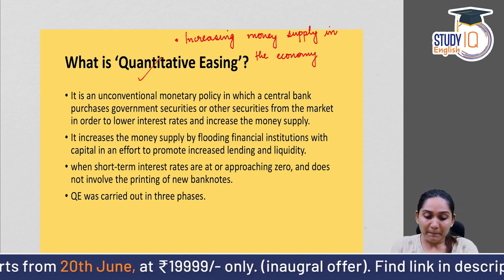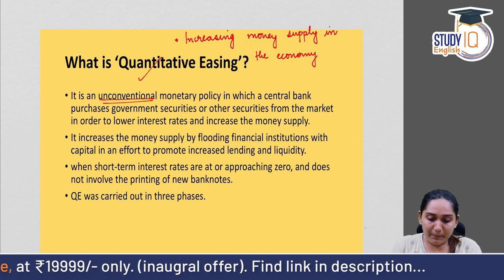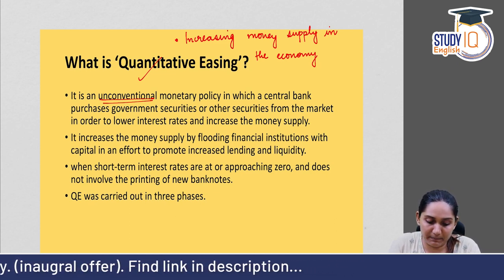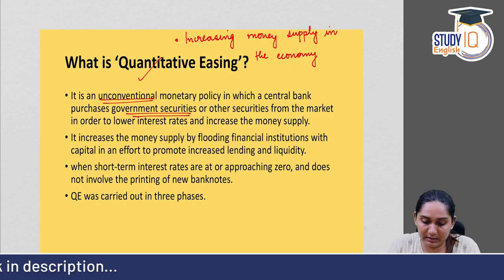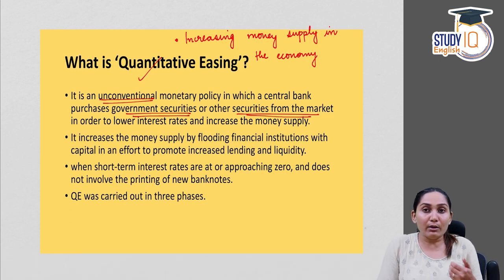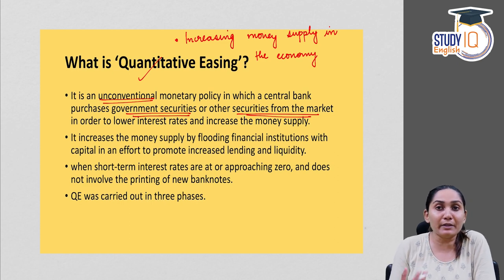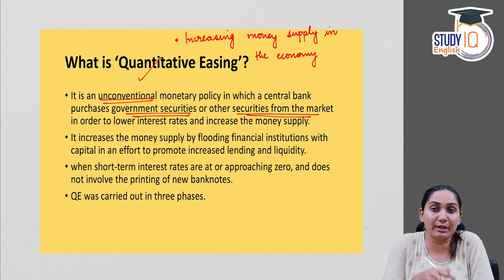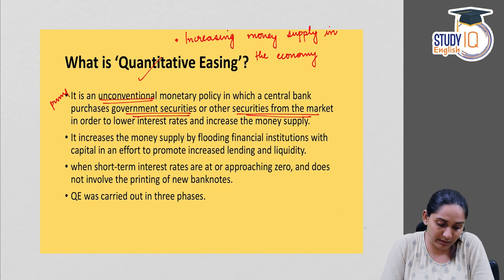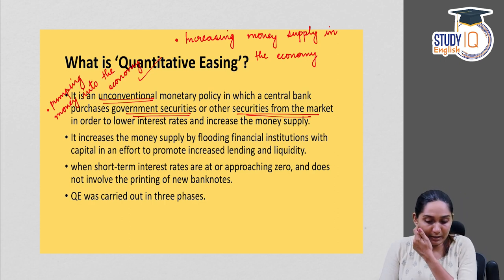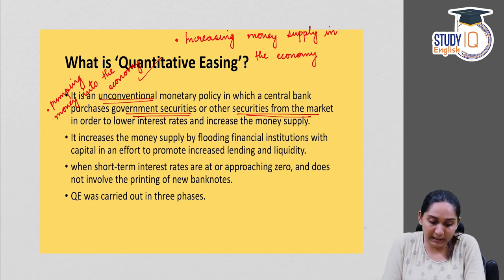Quantitative easing is an unconventional monetary policy in which the central bank purchases government securities or other securities from the market. When the central bank purchases government securities, it has to pay for them — and in doing so, the central bank is actually pumping money into the economy.